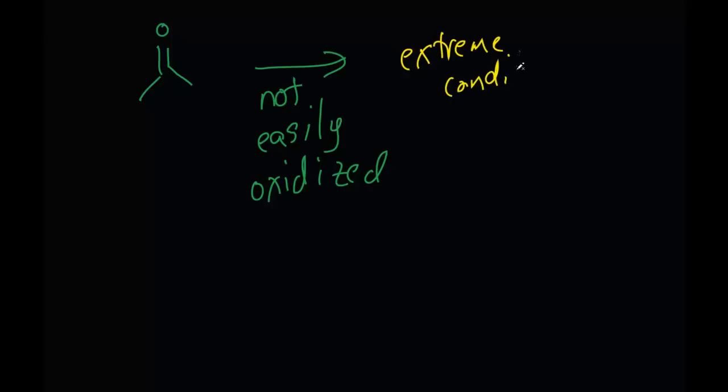Ketones, which involve two carbons surrounding this carbon-oxygen double bond, are not easily oxidized, really only under extreme conditions. And the reason is because now there's a carbon-carbon bond that has to be broken, which is usually pretty stable. So that's going to be pretty difficult to do.